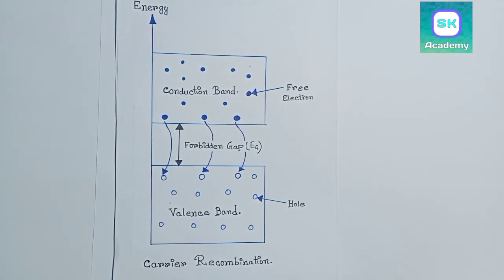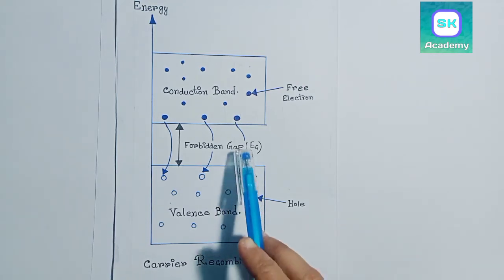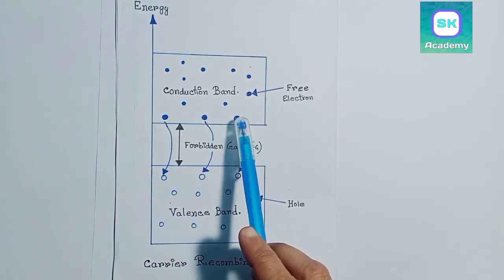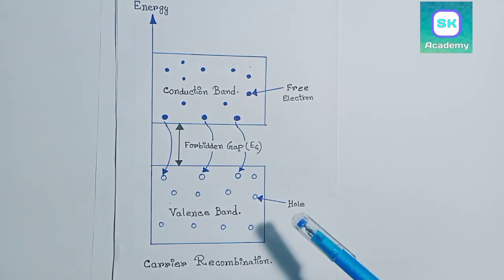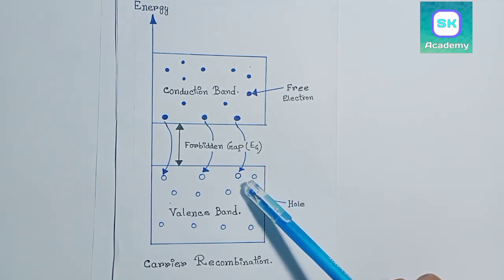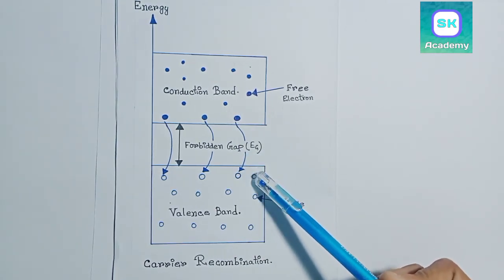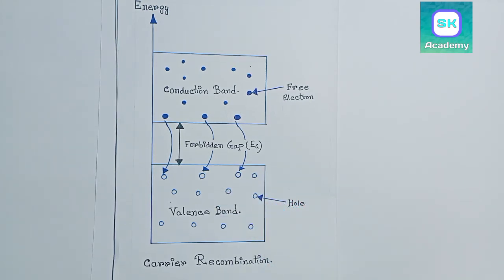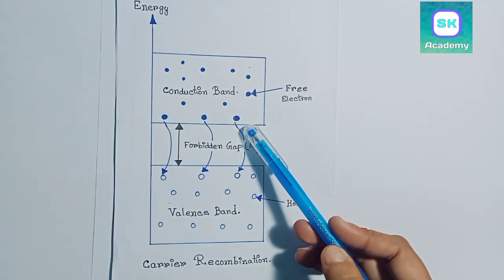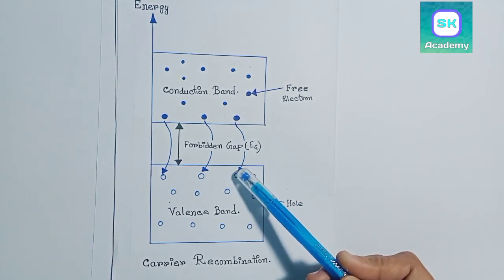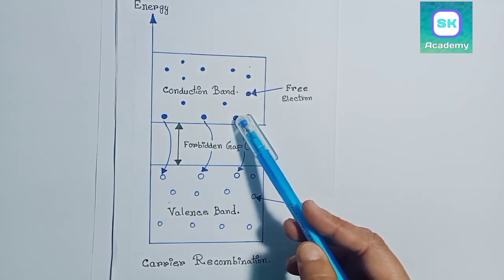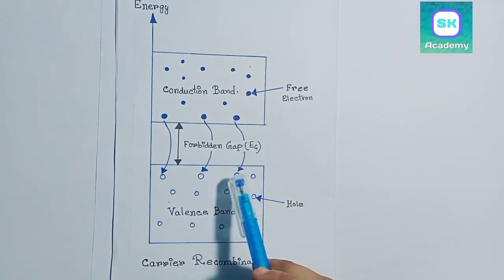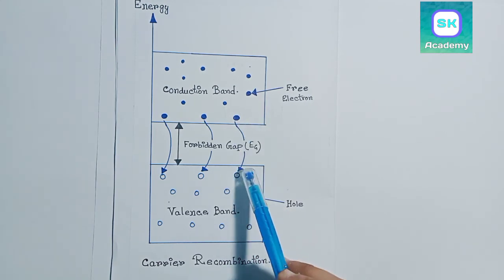Carrier recombination is the process by which an electron which is excited from the valence band to the conduction band falls back into a hole. In this process, free electrons and holes are recombined. That's why this process is called carrier recombination. When a free electron falls back into a hole, the hole is lost as well as the free electron is also lost because it is no longer free.